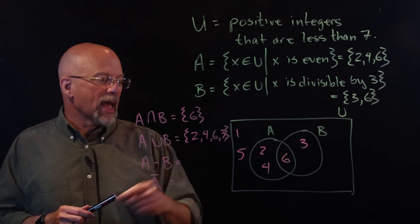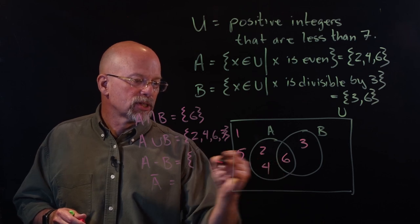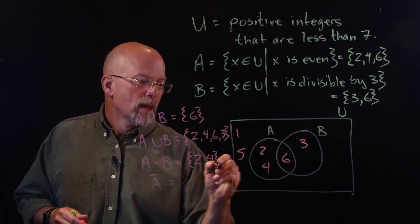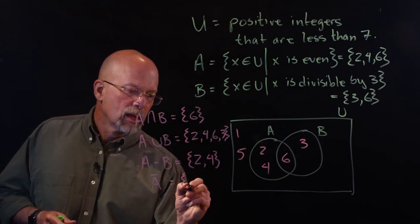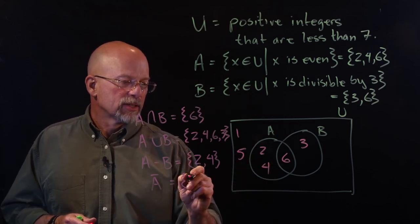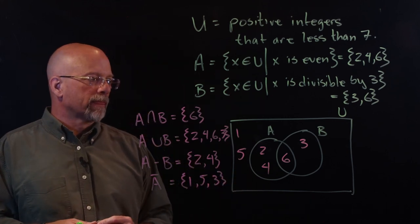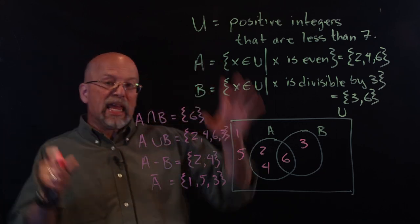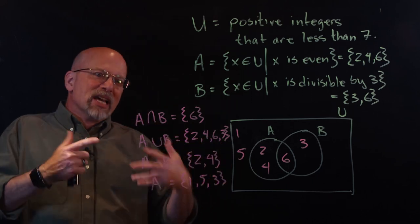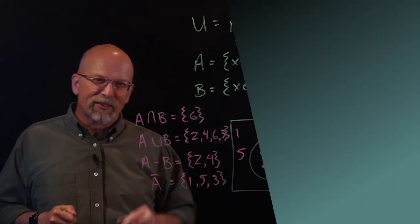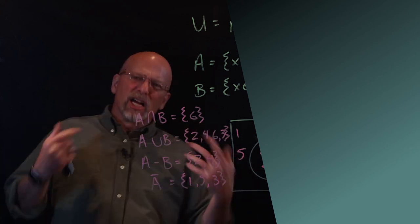The difference of A and B: we take everything in A — {2, 4} — but remove six because it's in B, giving us {2, 4}. The complement of A is everything not in A, so that's {1, 3, 5}. Once we get a handle on this, we're going to start doing some properties, identities, and theorems that allow us to manipulate these expressions to give us exactly what we're looking for when it comes to subsets and membership in a collection of items.